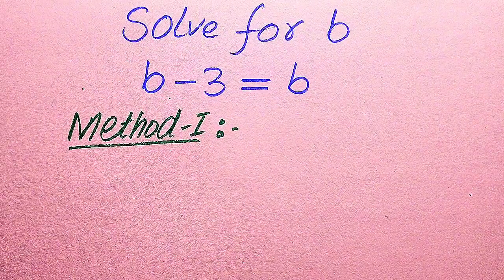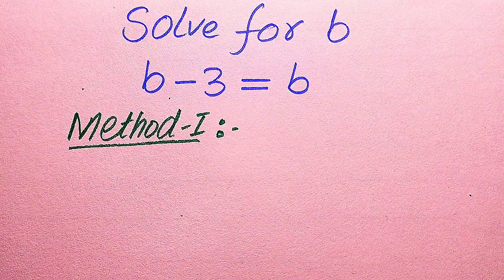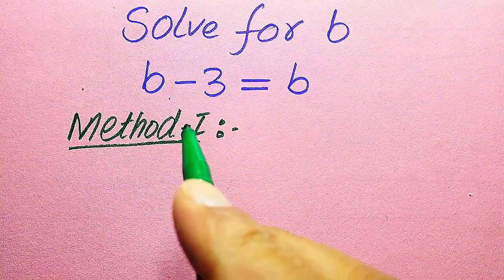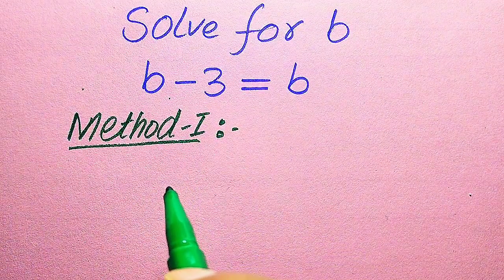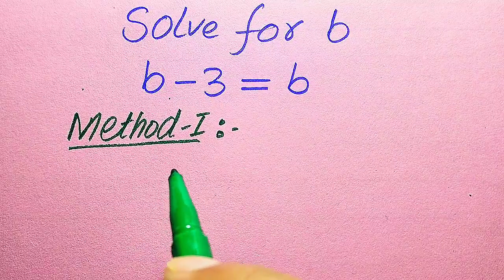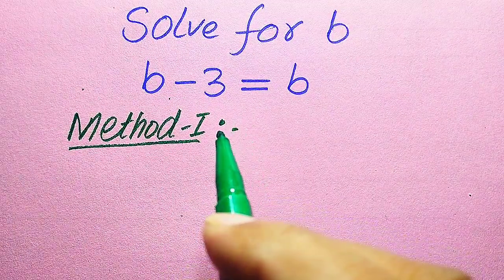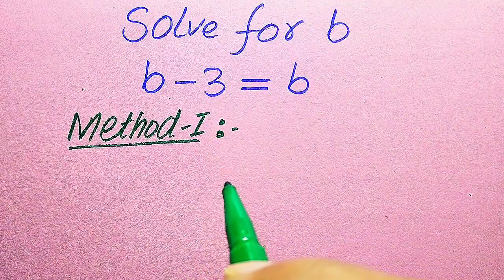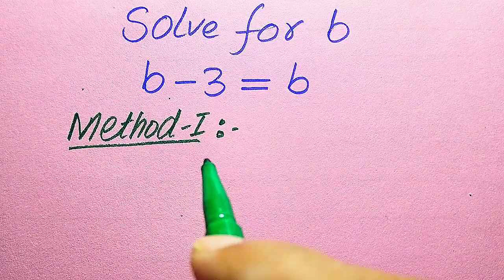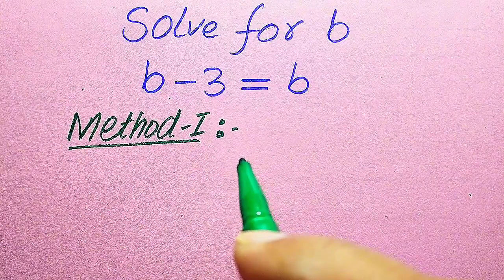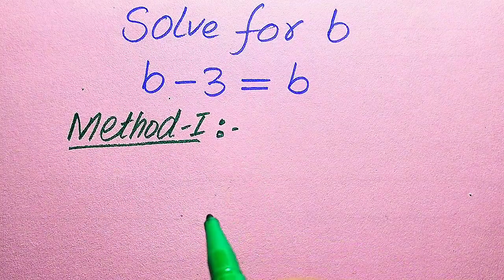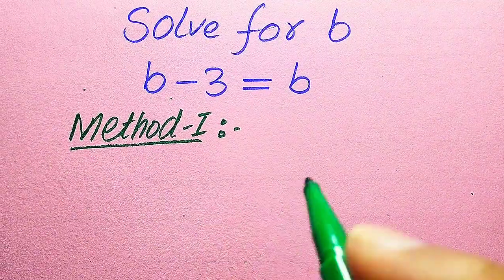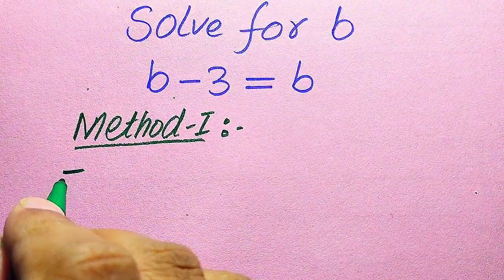We solve this problem using two methods. If you have any other method in mind, please don't hesitate to write it in the comment section. The reason for solving using Method 1 is: if in your exam the question asks you to find the value of b or find the roots of the equation, that solution is Method 1. If the question asks you to determine the solution or check whether the equation has a solution or not, then the answer is our direct Method 2.